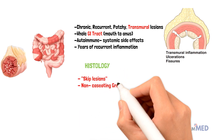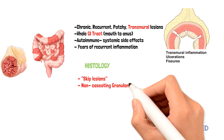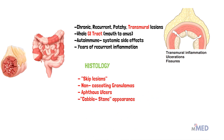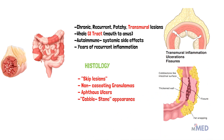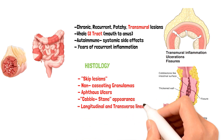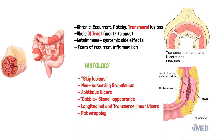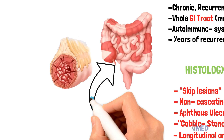On histology, Crohn's disease shows multiple separate areas called skip lesions and non-caseating granulomas. Aphthous ulcers can be seen in the mouth and esophagus. Linear deep ulcers that connect give the bowel a cobblestone appearance, a characteristic feature of Crohn's disease — diseased tissue is depressed below the level of normal mucosa. Creeping fat occurs when mesenteric fat wraps around the bowel wall, causing it to thicken.